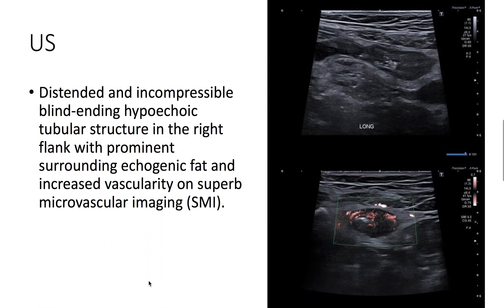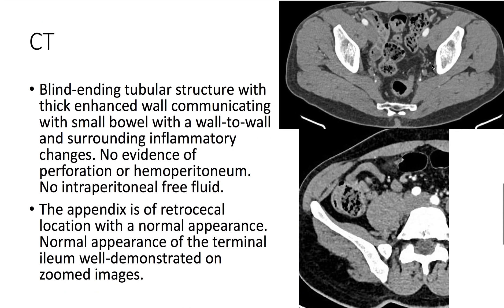On ultrasound, we see a distended and incompressible blind-ending hypoechoic tubular structure in the right flank. On CT, we again see this blind-ending tubular structure with a thick enhanced wall.